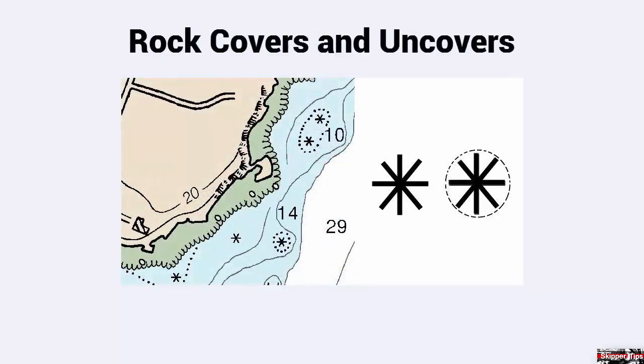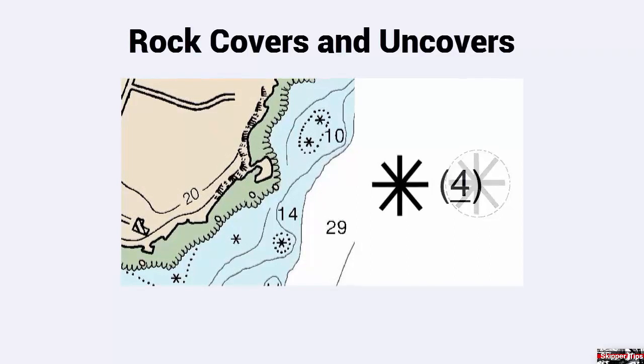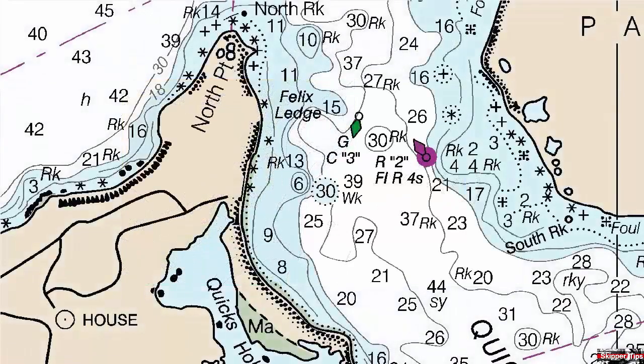Rocks that cover and uncover with the tide are shown by an asterisk symbol. The symbol may or may not be surrounded by dots. If you see an underlined number next to the asterisk symbol, this shows how much of the rock will be visible above the depth datum indicated by your chart. Let's take a look at a nautical chart and see how we might use annotation in color to make these rock symbols stand out day or night for safer and easier sailing navigation.